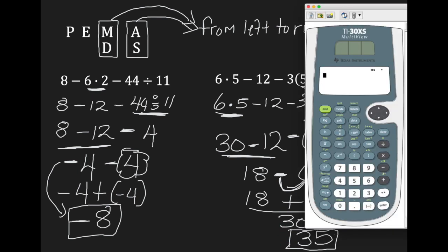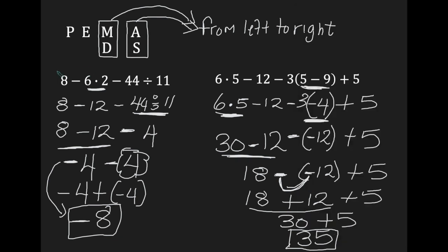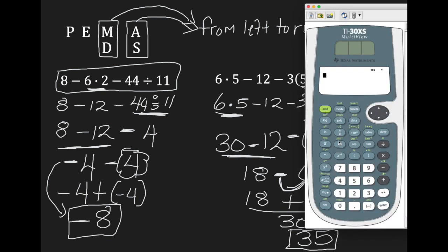You can actually use the calculator to solve these problems. If you're going to use the calculator, just input as you see the problem. So for this first example: 8, subtract, 6 times 2, take away 44 divided by 11, and hit enter. It gives me a value of negative 8.